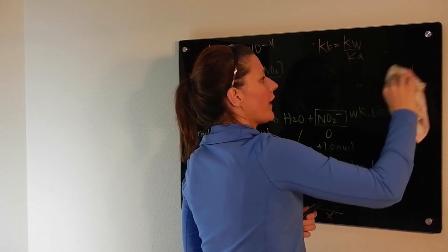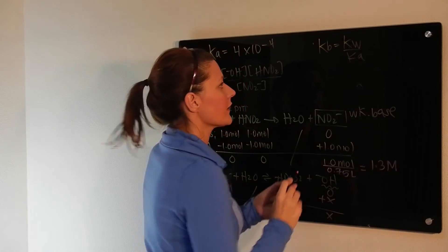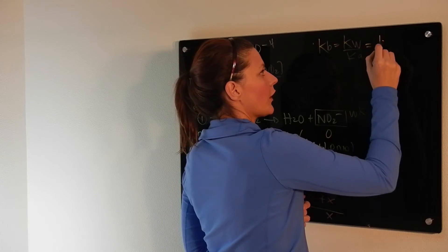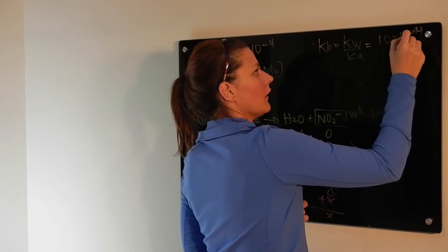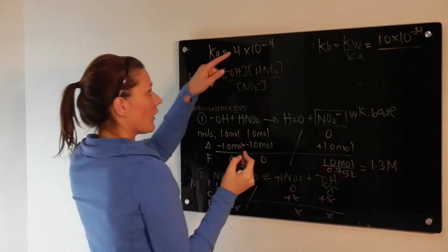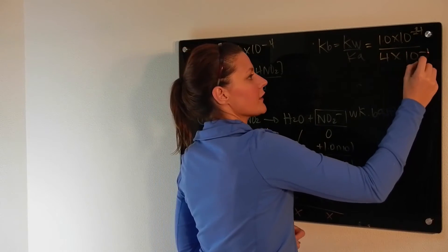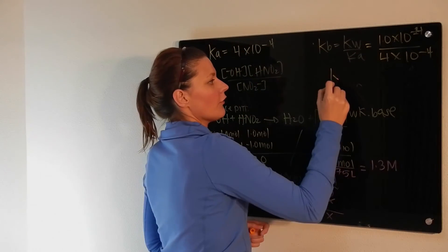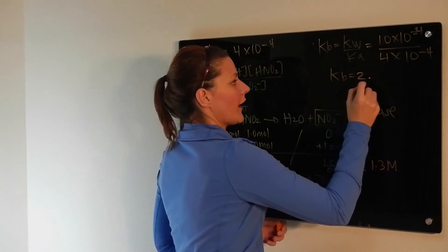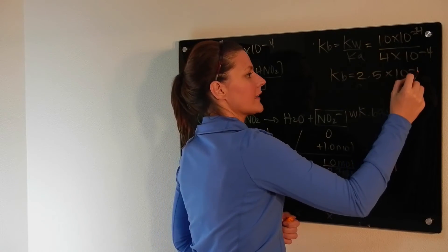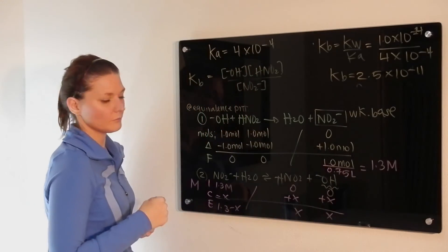So Kb is equal to Kw over Ka. So what you're going to do then is set this equal. Kw is our constant 1.0 times 10 to the minus 14. And the Ka value is the one they gave you, 4 times 10 to the minus 4. Solve for your Kb value, which is equal to 2.5 times 10 to the minus 11.